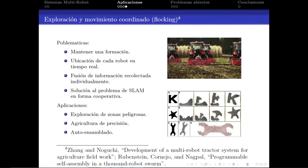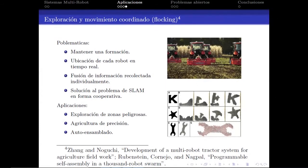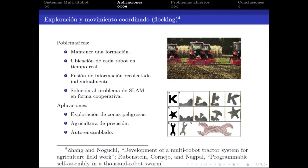Otro banco de pruebas bastante común es el de exploración o movimiento coordinado. En el caso de exploración se busca que los grupos de robots se extiendan a lo largo del entorno de trabajo recolectando la mayor cantidad de información y reenviándola a un nodo central, o tratándola en forma distribuida. El principal problema es conocer la ubicación precisa de cada robot y la construcción de información recolectada individualmente de distintos tipos de sensores.